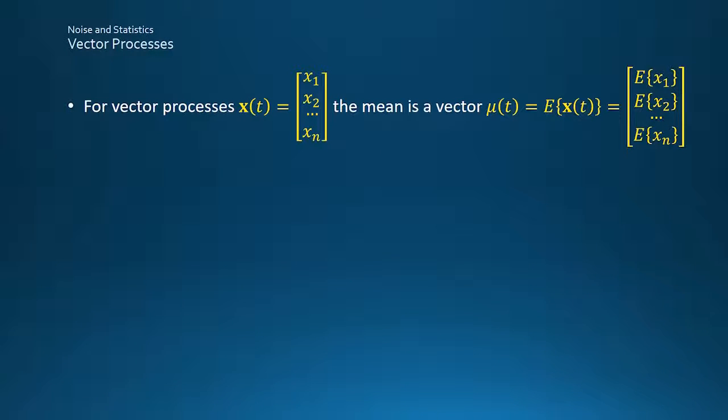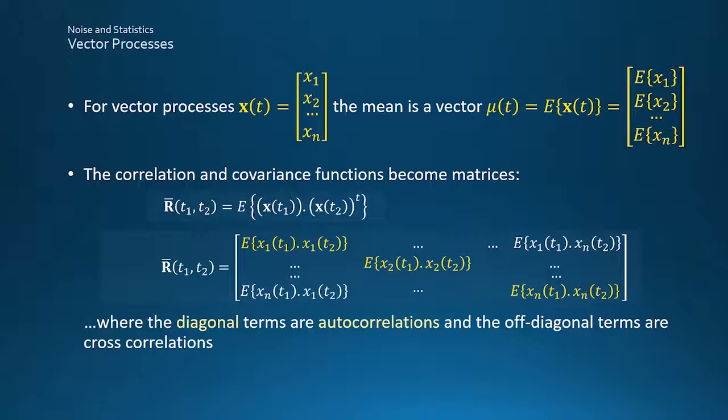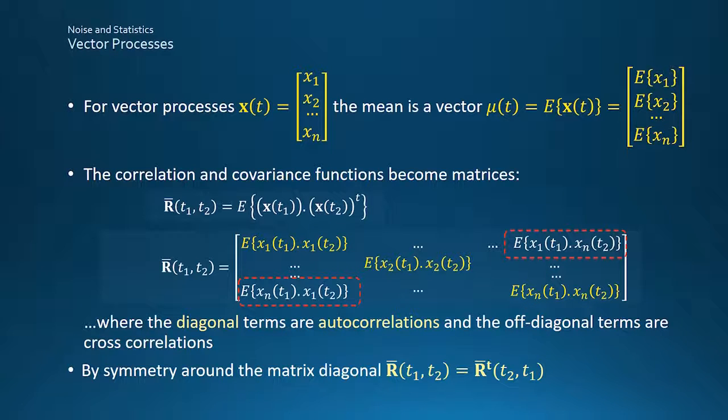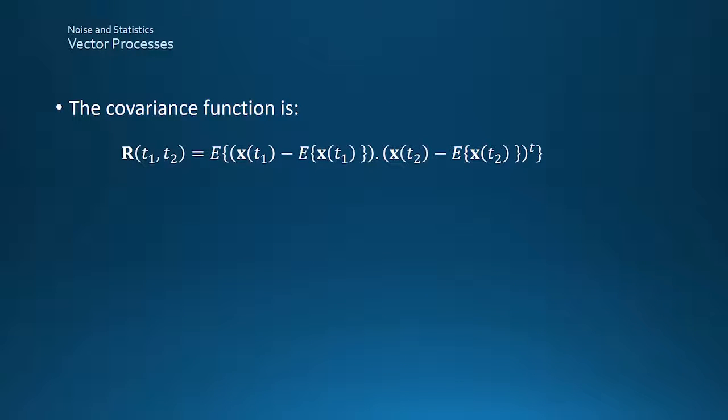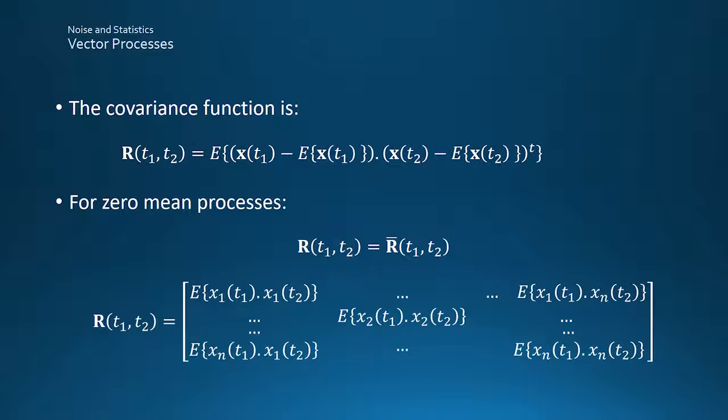A vector can package up the individual signals that might be required to model something like an aircraft or vehicle position. The mean then becomes a vector of the individual signal means. But the correlation and covariance functions now involve multiplications of two vector signals, which results in a matrix. For example, this is the correlation function of a non-stationary process. The diagonal terms are the autocorrelations of the individual signals, and the off-diagonal terms are the cross-correlations between the different signals. It's worth noticing that owing to the symmetry around the diagonal, swapping the two time instances around is the same as performing a matrix transpose.